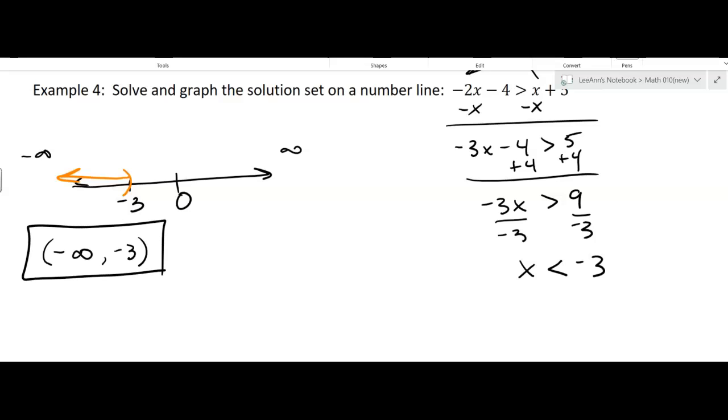Now, in the last example, I didn't put the set builder notation, but you could if they ask or if you want X, the set of X, such that X is less than negative 3. Some people like the set builder notation because it comes right from here. But I'm just going to tell you the graphing and the interval notation. You're going to see that. And sometimes they're going to say, use the interval notation, and you want to be used to it.